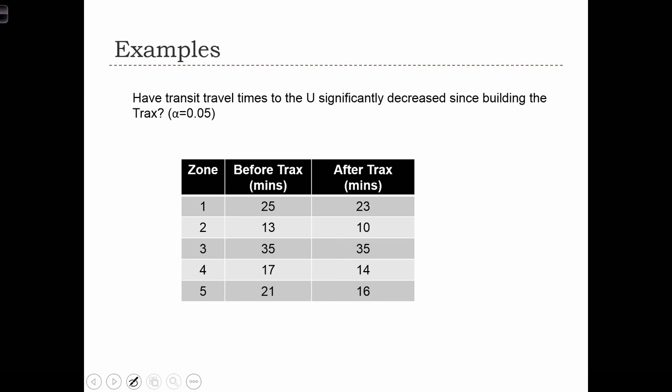Here's an example. The question is, have transit travel times to the university significantly decreased since building the tracks? So here we have a sample of five observations. And for these five observations, these are locations in the city, we know how long it took to get to the university by public transit before tracks was built and after tracks was built.